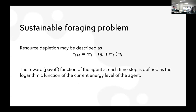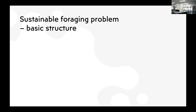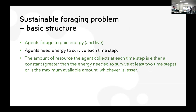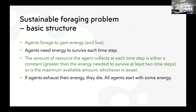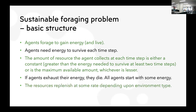In the basic foraging structure, agents forage to gain energy and need that energy to survive each time step. The amount of resource collected at each time step is either the constant maximum amount A, or the maximum amount available — whichever is less. Agents exhaust their energy level at each time step, and all agents start with some personal resource of energy drawn from an interval. Resources in the environment replenish at some rate depending on which environment type they are in.